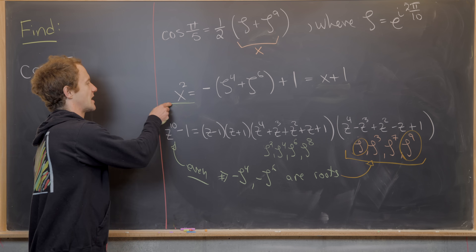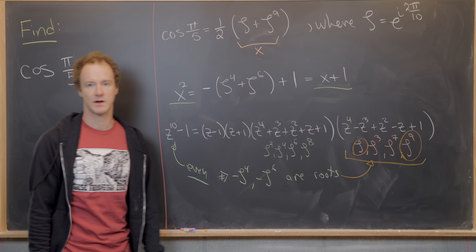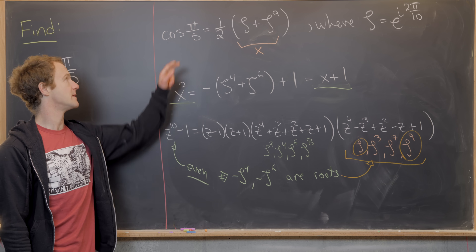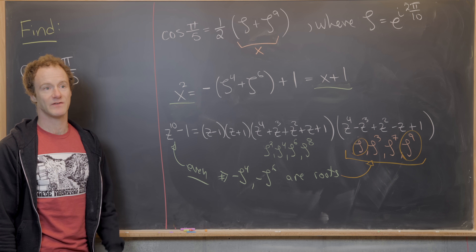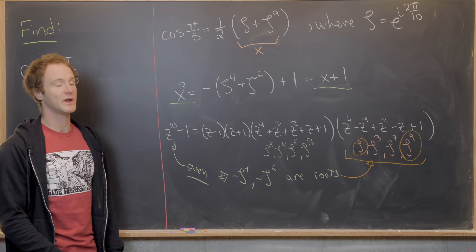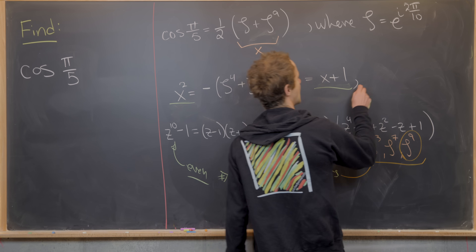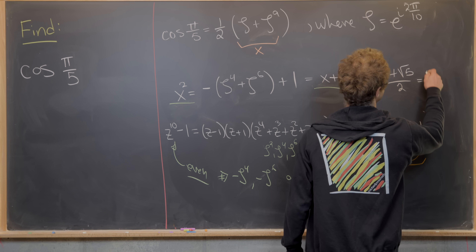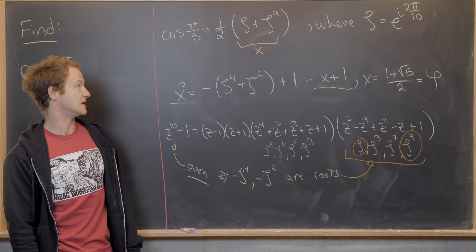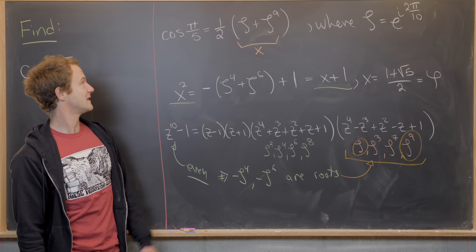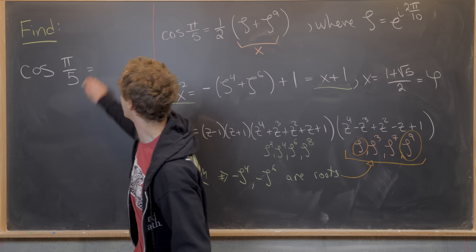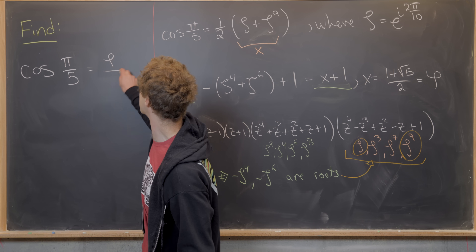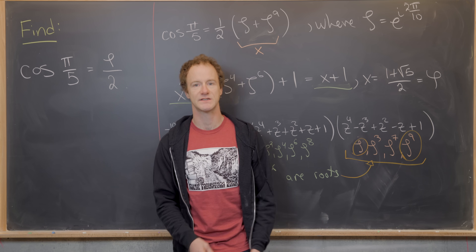We can now easily solve the quadratic x² = x + 1. It has two roots — one positive and one negative. Since cosine of π/5 is positive (first quadrant), we keep only the positive root: x = (1 + √5)/2, which is the golden ratio φ. Putting this all together, cosine of π/5 = φ/2. And that's a good place to stop.